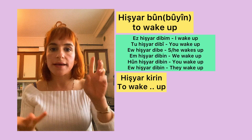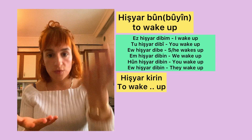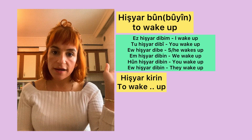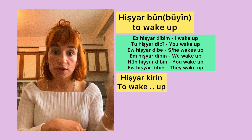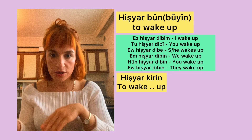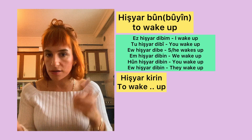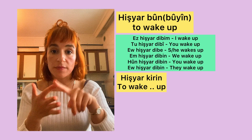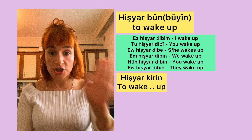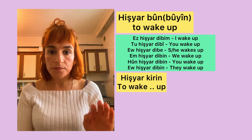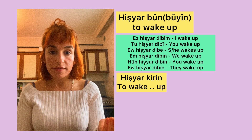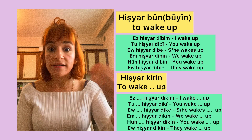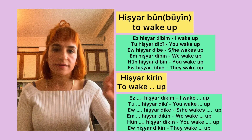In the present form, 'hushiar buyin' conjugates as: 'hushiar de boom', 'hushiar de bo', 'hushiar de bêm', 'hushiar de bin', 'hushiar de won', 'hushiar de won'. It's very easy — just 'buyin': de boom, de bî, de bêt, de bîn.